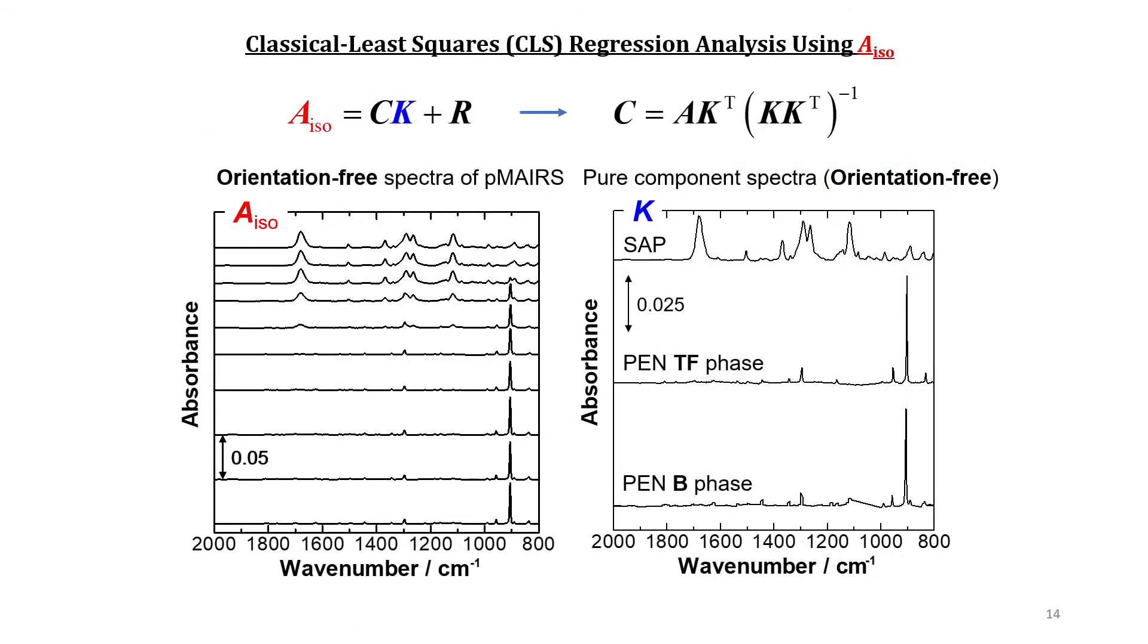Now, the reaction analysis is performed by using the CLS regression analysis. CLS works powerfully if the exact number of constituents in the system is available, which determines the matrix size. To operate the CLS analysis, the A_iso spectra are stored in the matrix A, and three pure constituent spectra are put in the matrix K, and then the concentration matrix C is readily calculated.